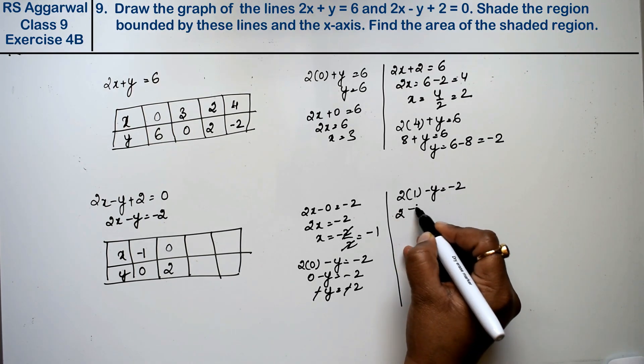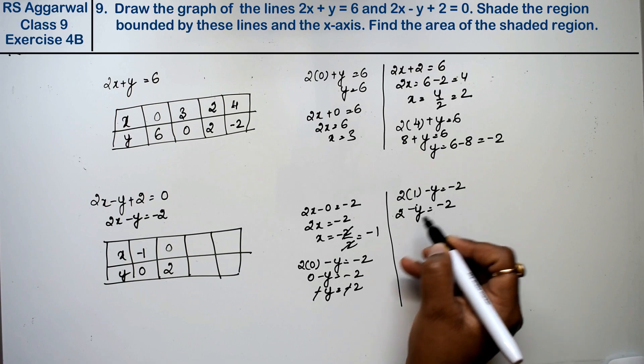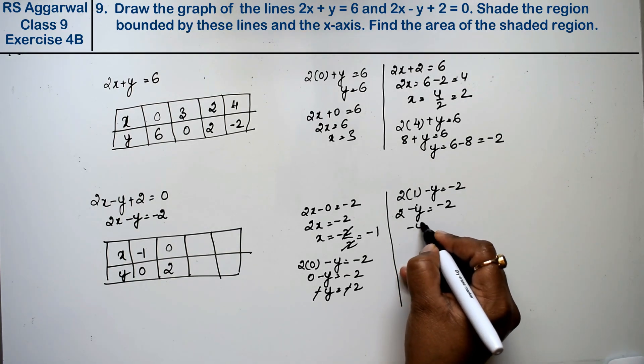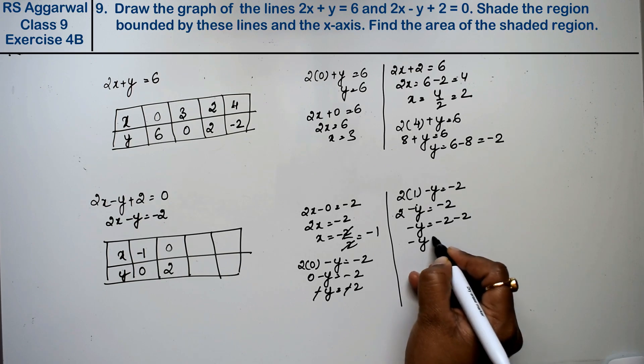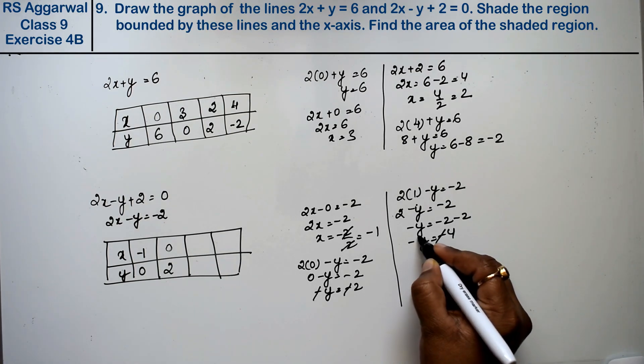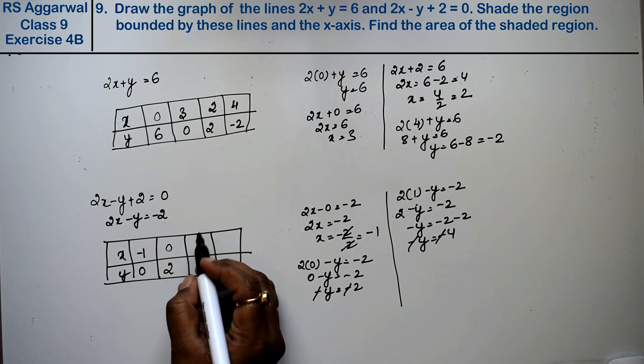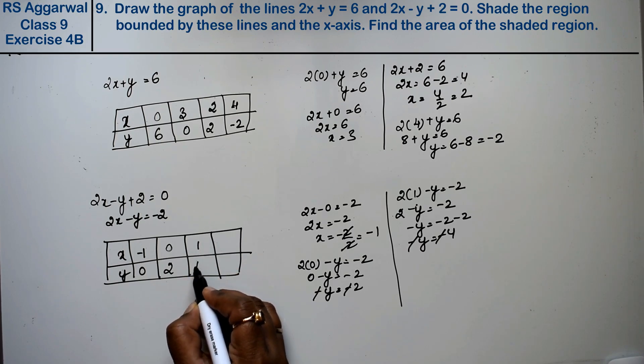For the second equation: 2x minus y equals minus 2, so minus y equals minus 2 minus 2, that is minus y equals minus 4, so y is 4. When x is 1, then y is 4.